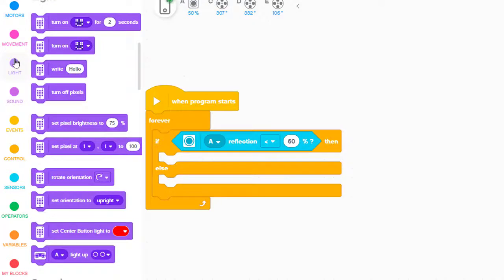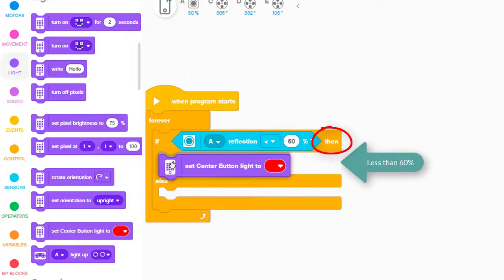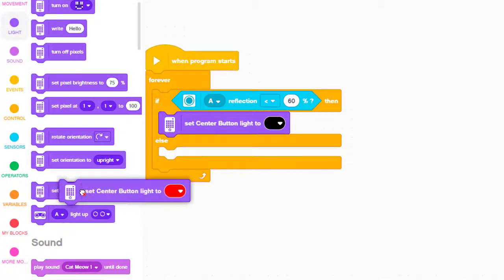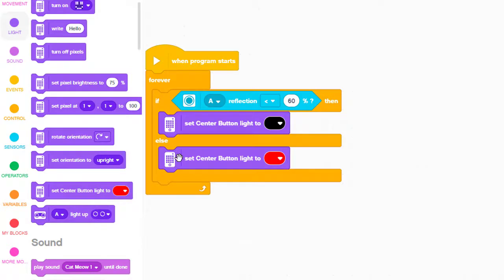The next part of the if-then-else block is the then, which is where we put a block that should execute when it's true the sensor is over the road. Right now, we're testing our understanding of the color sensor, so we put a purple light block there that turns the center button to black or off. We need to change the center button back to white when the sensor no longer sees the road, so we put another light block in the else part that does that. The else part is executed whenever the if part is false. In this case, it will be false when the color sensor receives 60% or more of the light from the LED.